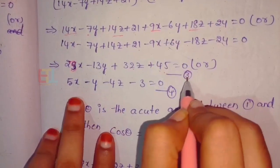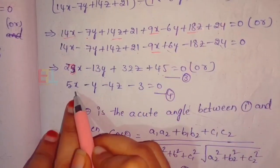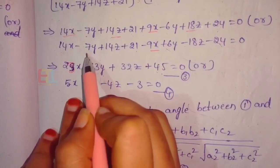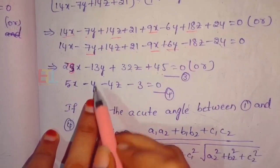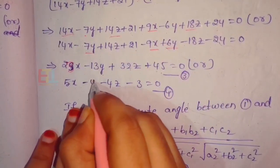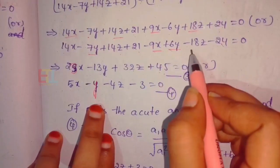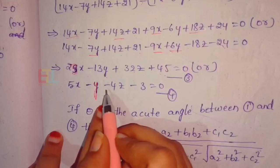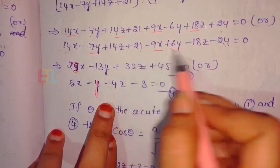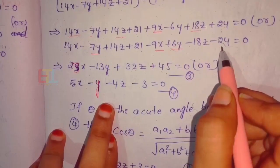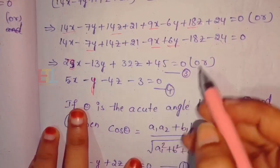For equation 4, subtracting: 14x minus 9x gives 5x; minus 7y minus (plus 6y) gives minus y; 14z minus 18z gives minus 4z; 21 minus 24 gives minus 3. So equation 4 is: 5x minus y minus 4z minus 3 equal to 0.